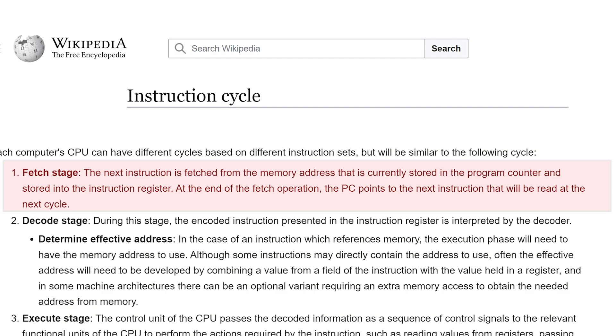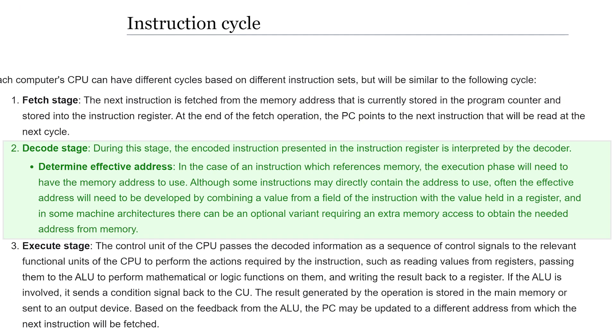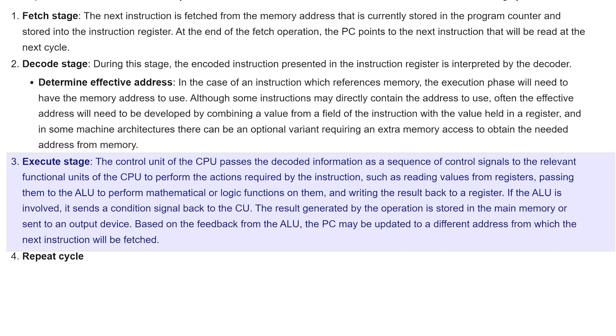In Fetch, we read the current instruction from main memory using the address stored in the program counter. Next, we decode the instruction, and this often requires us to calculate an effective address for the data. Finally, we execute the instruction, which might be a load or store, an ALU operation, or a jump or branch. Then we start again.